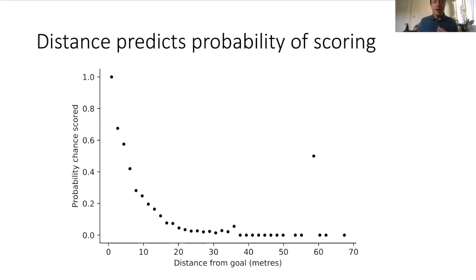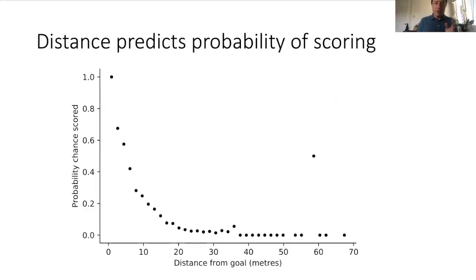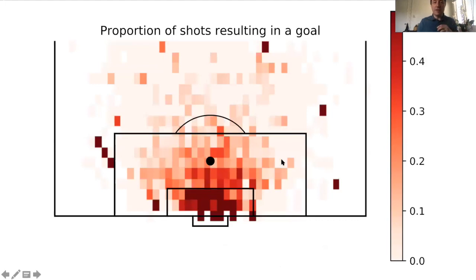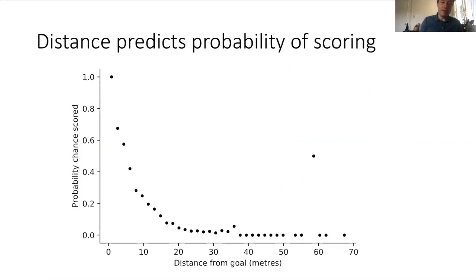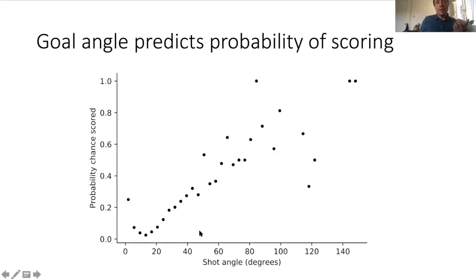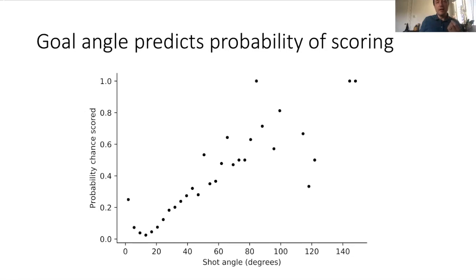To recap: we've reduced a complex two-dimensional problem of shot locations to two one-dimensional relationships — angle and distance — that capture the essential geometry of scoring. Next time, I'll take these two variables and fit a statistical model to them that predicts whether a particular shot results in a goal. That statistical fit will be our expected goals model. Tune in next time for that.